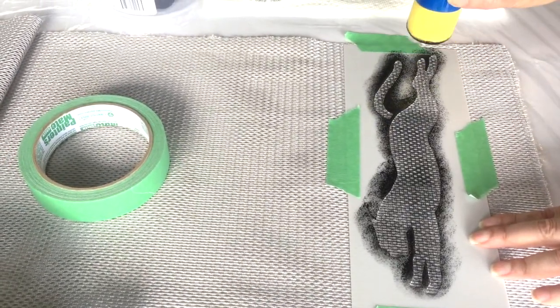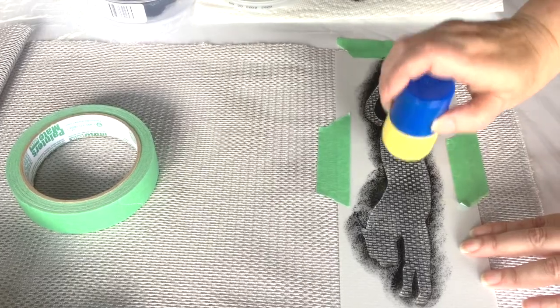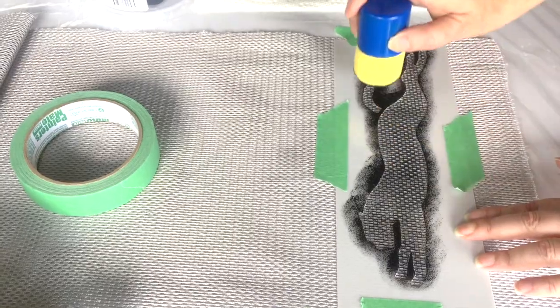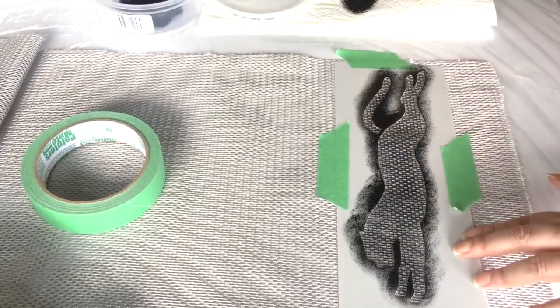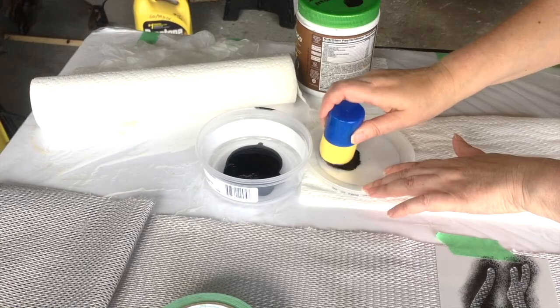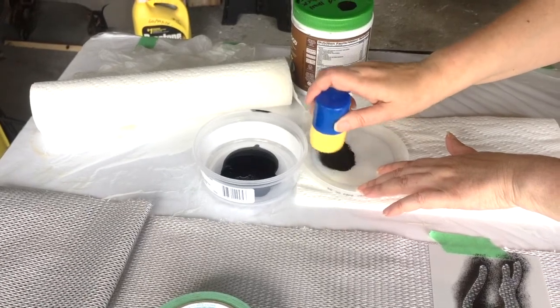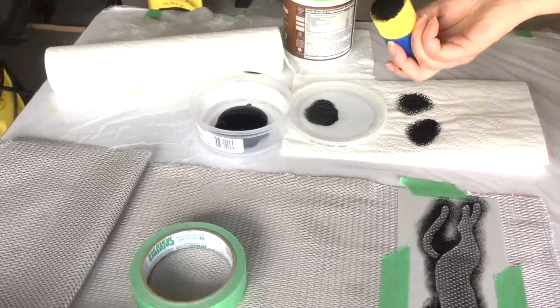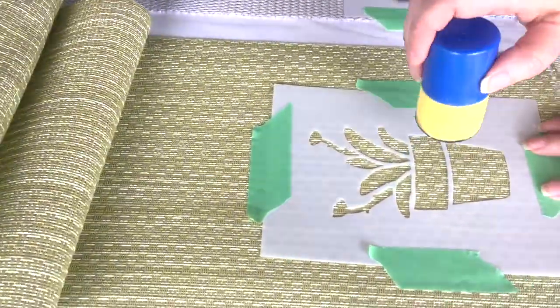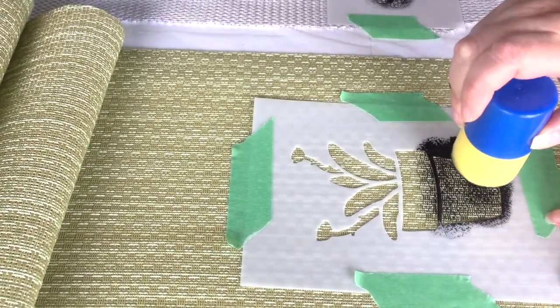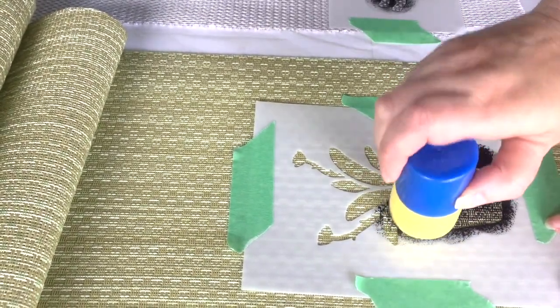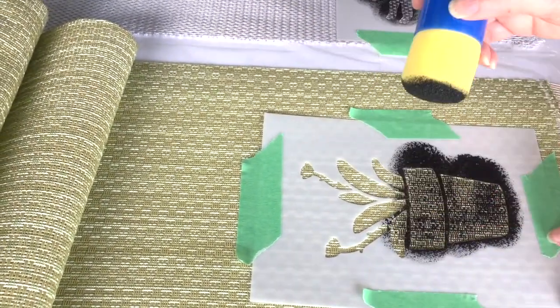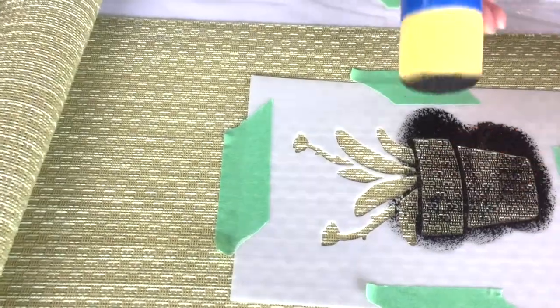Now you can do a light application and you can always come back and do it darker. I recommend a few light coats. Let's go back in, dab off, dab off again so that it's good and dry. Now we're going to try our second one here.